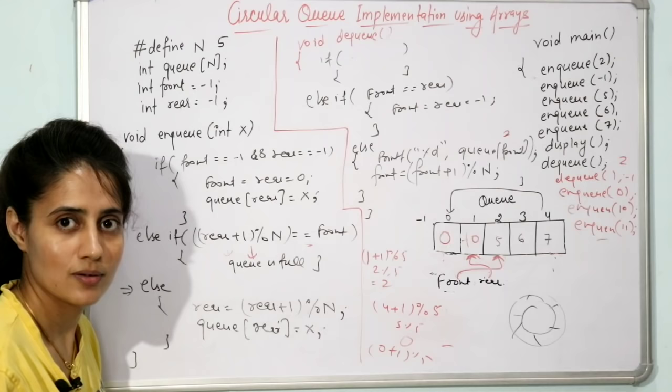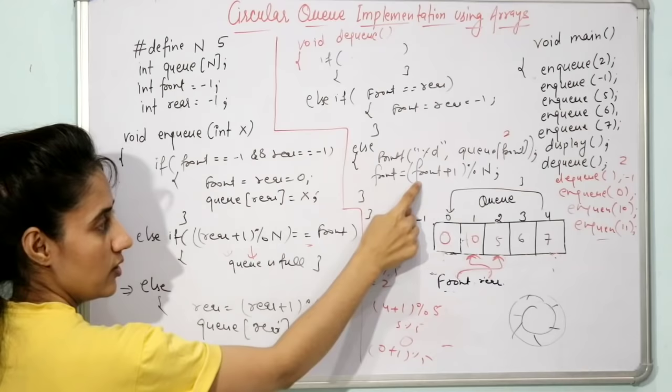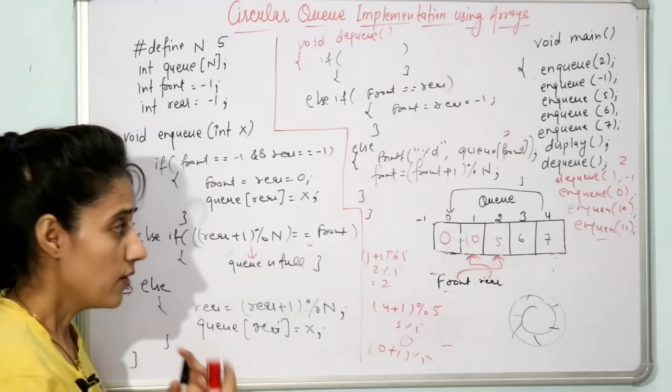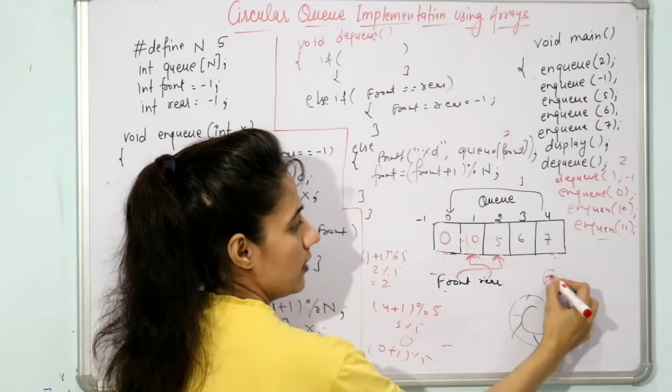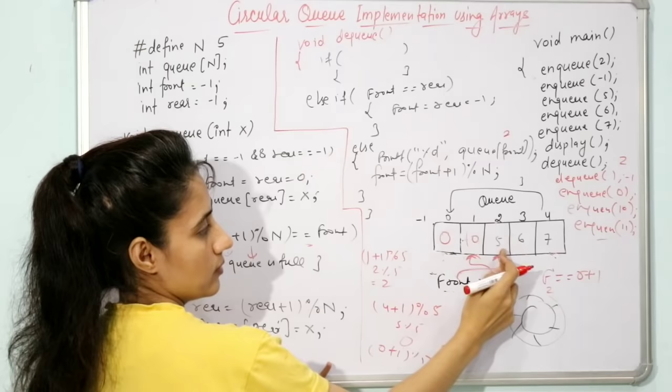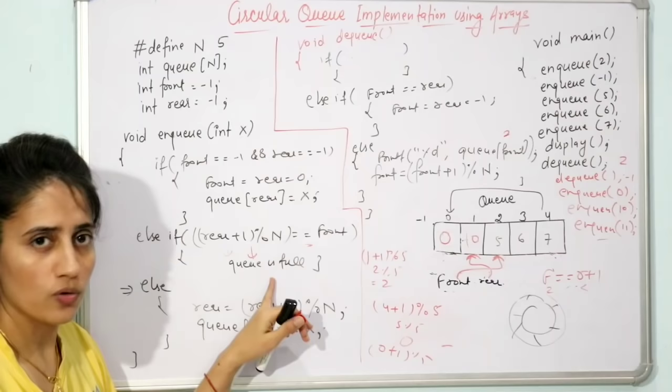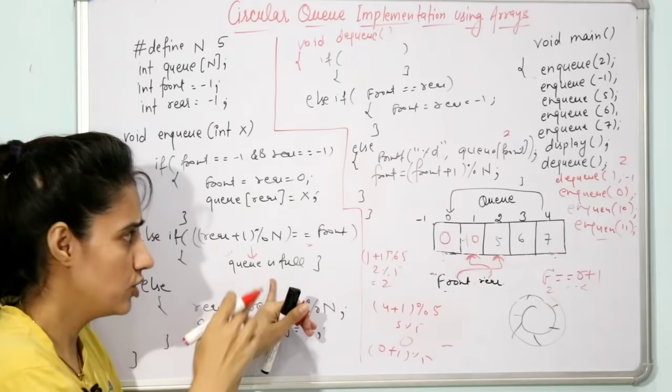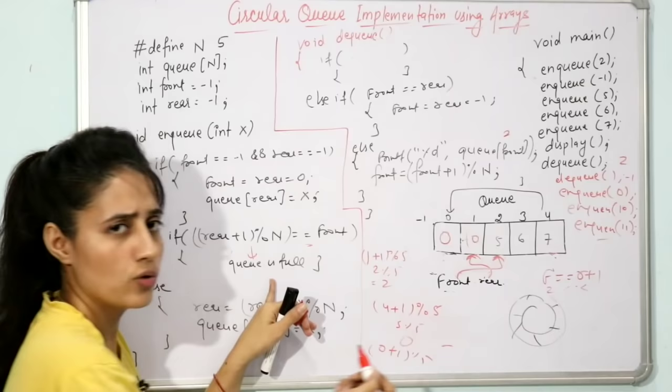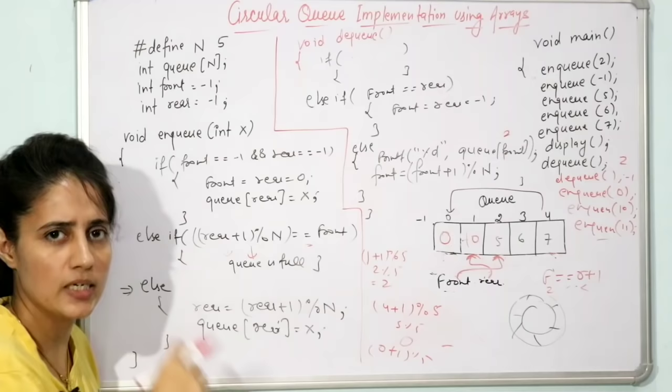A note on the full condition: some sources write it as front == rear + 1. With front=2 and rear=1, that is 2 == 2, which is true. However, this requires additional conditions — you'd also need to check if rear == n-1. Using (rear+1)%n == front as a single condition covers all cases and is simpler.